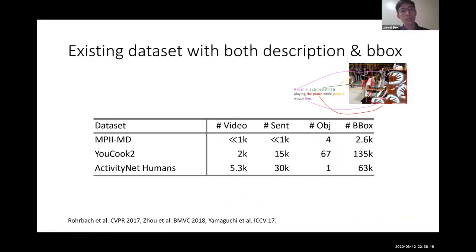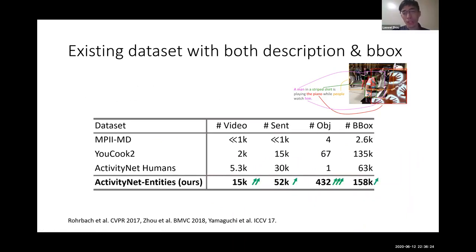Compared to existing datasets with both descriptions and bounding boxes, our ActivityNet Entities has more bounding boxes and a variety of object categories.